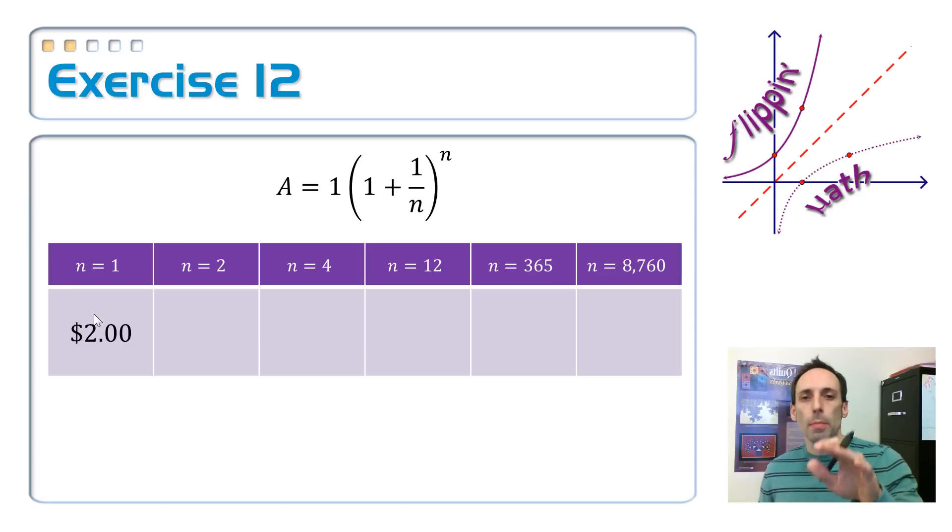How about if I compound it twice? So if I put a two in there, now I'm up to $2.25. So just an additional compounding that just earned me an extra 25 cents. That's nice. I mean, if I only had a dollar to begin with, that's big money.